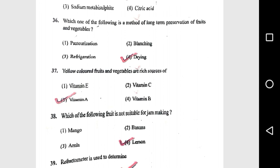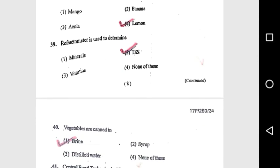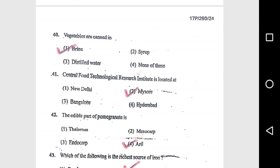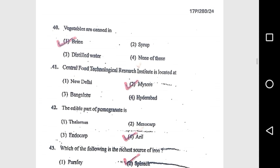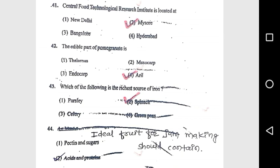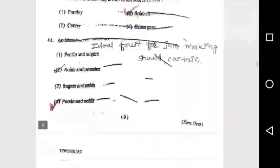Question 37: Yellow colored fruits and vegetables are a rich source of vitamin A. Question 38: Which of the following fruits is not suitable for jam making? Lemon. Question 39: A refractometer is used to determine TSS (total soluble solids). Question 40: Vegetables are canned in brine. Question 41: Central Food Technological Research Institute is located at Mysore.